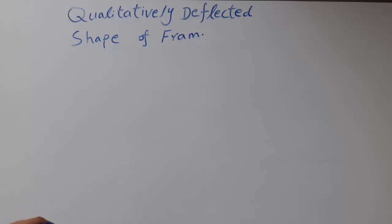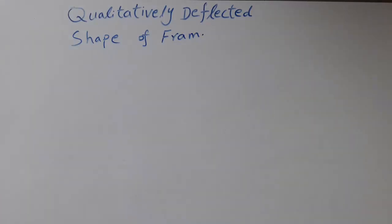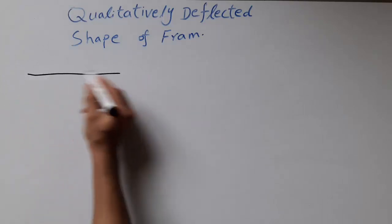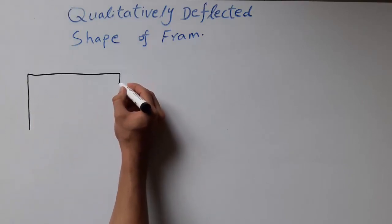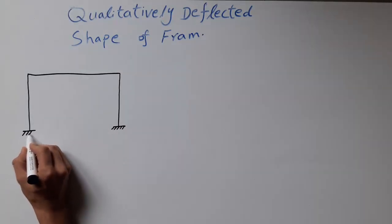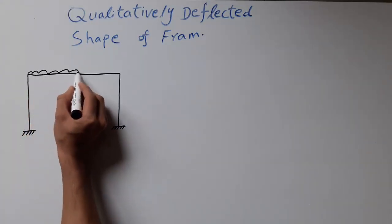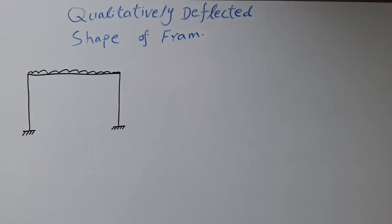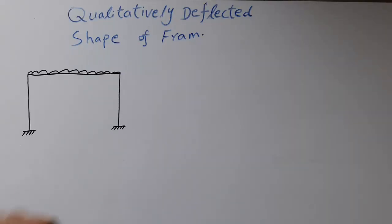Hello and welcome to my YouTube channel. In this video I am going to explain how we can draw qualitatively the deflected shape of a frame. We have four types of frame and we will look at how the deflected shape would look like. Qualitatively deflected shape means that we don't have a particular force unit — we just have a force and we draw the diagram without any numbers.